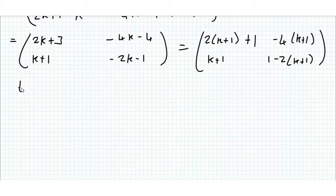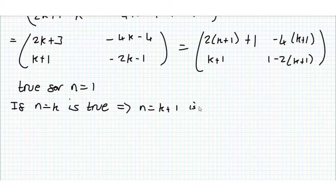So it's true for n equals 1. And if n equals k is true, this implies n equals k+1 is true. And taking k equals 1, that means n equals 2 is true. And then 2 can be our k, and then n equals 3 is true, and so on. So you have to write some sort of qualifying statement there. But we've now shown that this is true for all natural numbers.